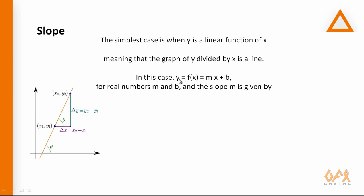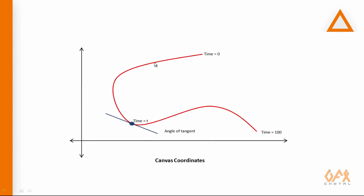If y equals f(x) and m is my slope, then m equals the change in y divided by the change in x — what we call delta y over delta x, or dy/dx. This formula works for a linear function, but the problem is that we have a curved path, so we need to find the angle of the tangent differently.